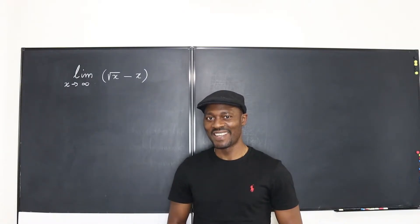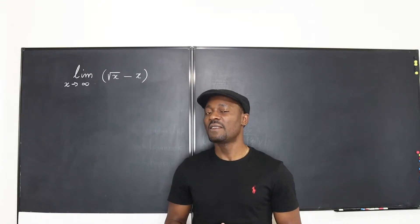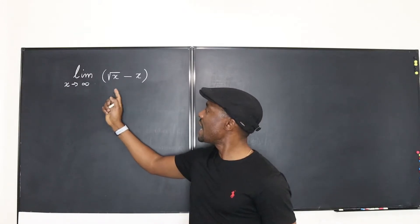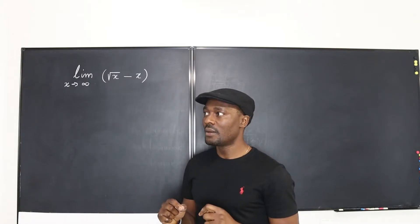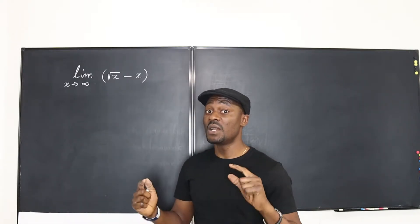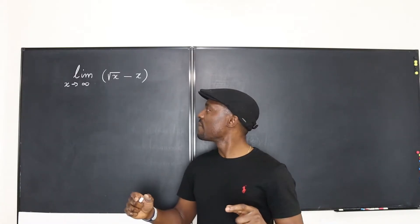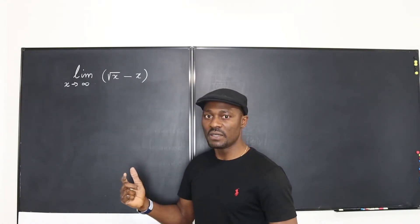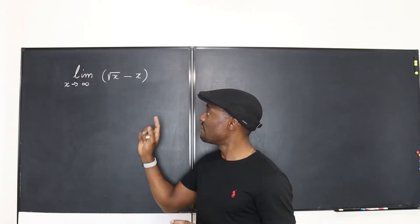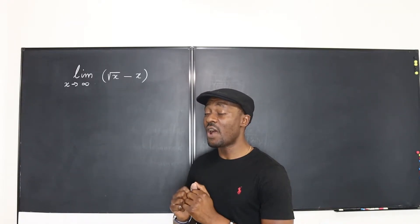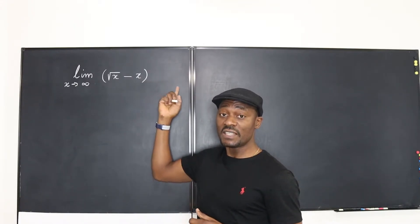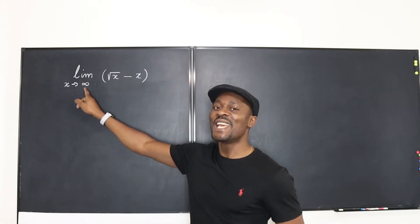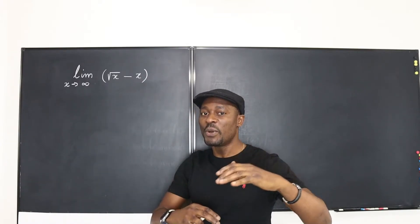Hello and welcome to another video. I want to show you that every time you get a problem where your variable is going to infinity and the two terms you're subtracting from each other also go to infinity — remember you cannot subtract infinity from infinity — you want to ask yourself: can I create a product of two expressions from whatever I'm given? If you cannot create a product, meaning you can't factor something out, you'll have to multiply the term by its conjugate and divide by its conjugate so you have a rational expression. When working with infinity, a rational expression is always the way to go.